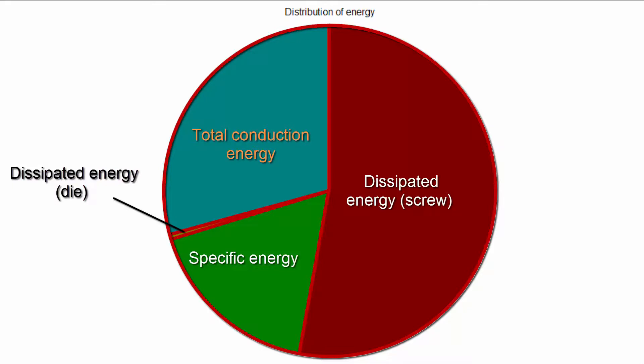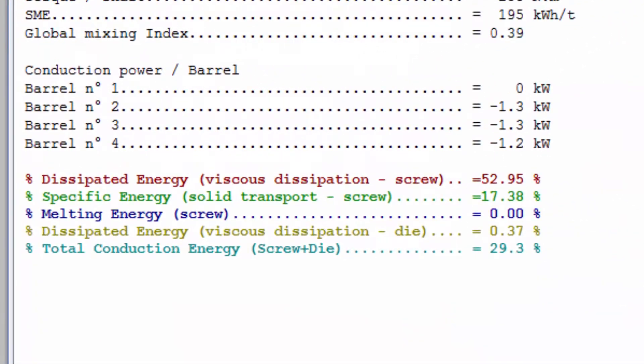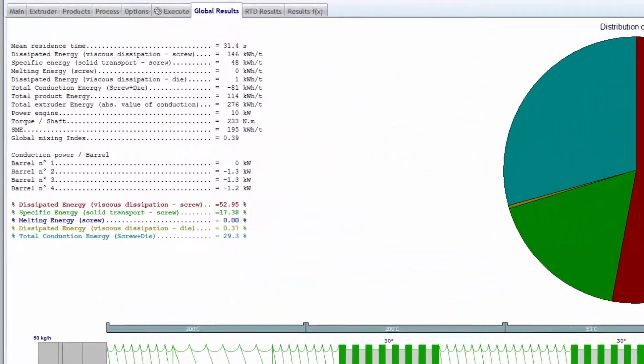The total conduction energy takes into account the conduction phenomena on screw and die. Energies are expressed in percentage and absolute value.